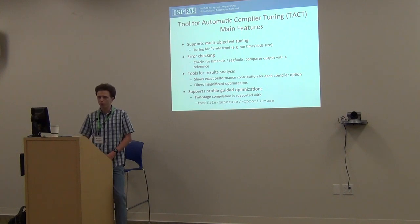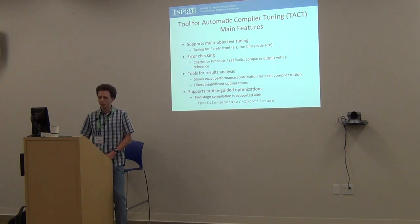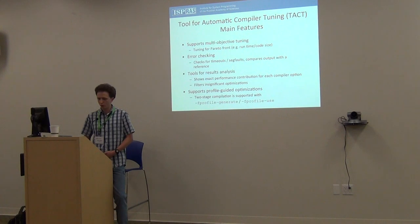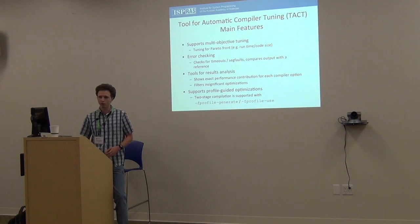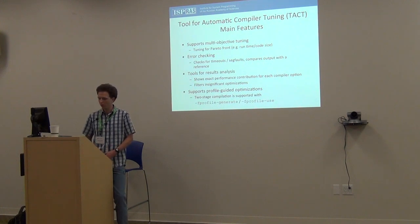The main feature is the tool for results analysis — to find which options are most important. The genetic algorithm is not very smart and gives very long command-line parameters, but the tool makes it easier to find which are important. It also supports profile-guided optimizations: it compiles with profile-generate, then runs, then recompiles with profile-use, interleaving those phases so the target and host do not stall.